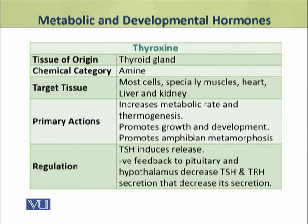Another major metabolic hormone is thyroxine, produced by the thyroid gland. It is an amine hormone and it targets most cells of the body, especially muscles, heart, liver and kidney. Its primary actions include increasing the metabolic rate and thermogenesis. It promotes growth and development and also promotes metamorphosis in amphibians. The thyroid stimulating hormone (TSH) from the pituitary induces its release from the thyroid gland, while its secretion is controlled by negative feedback to the pituitary and hypothalamus, decreasing TSH and TRH secretions, which in turn decrease thyroxine secretion.